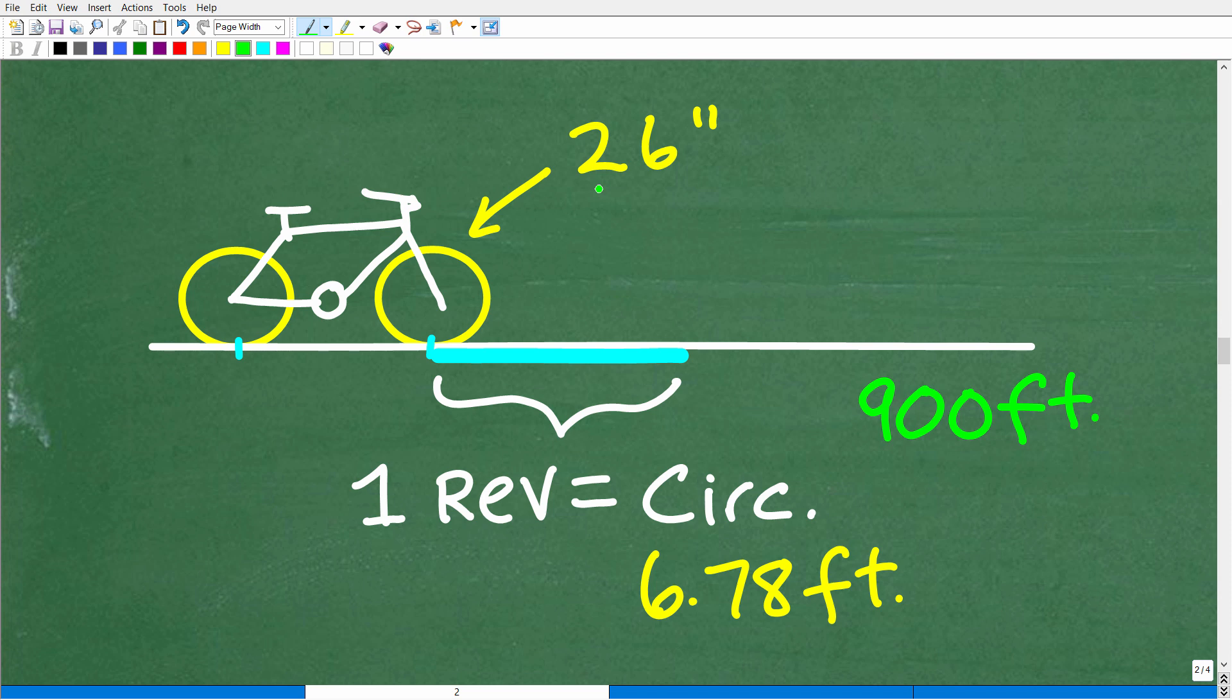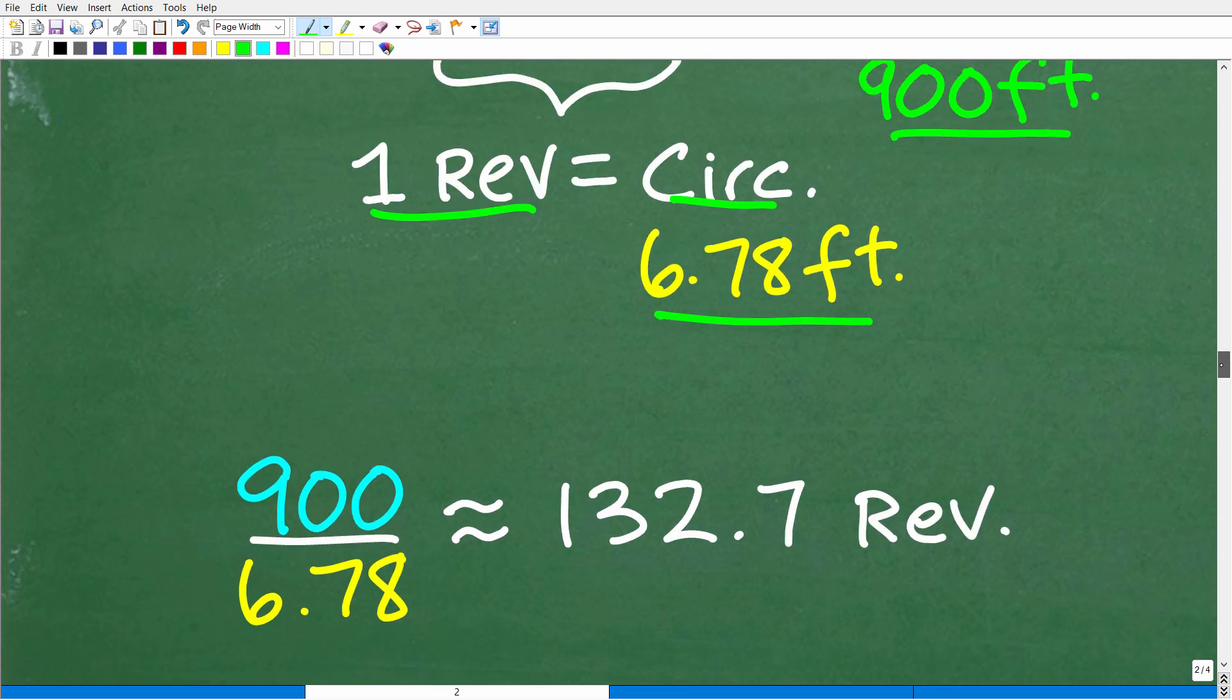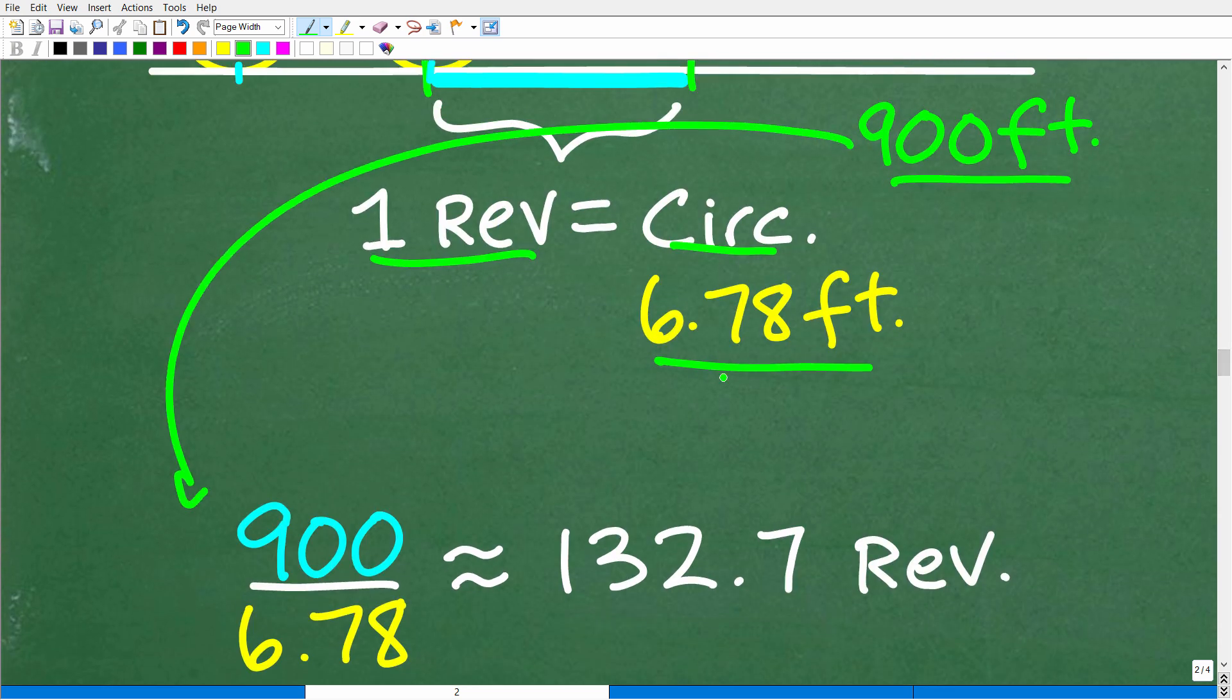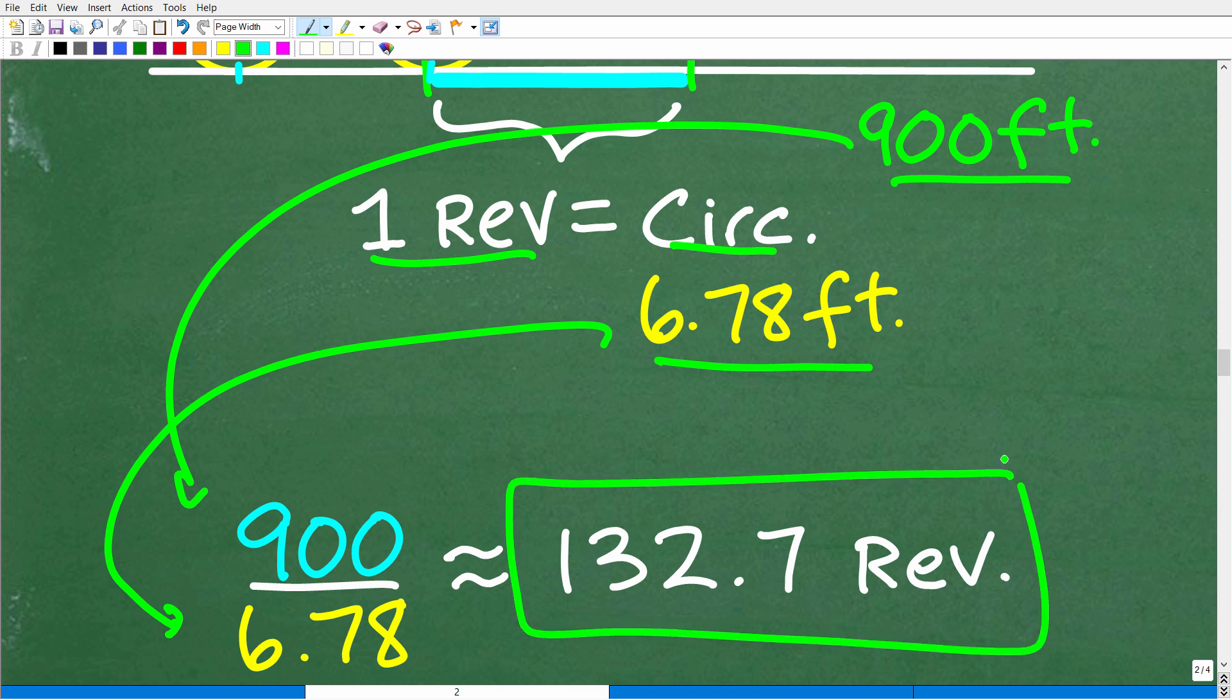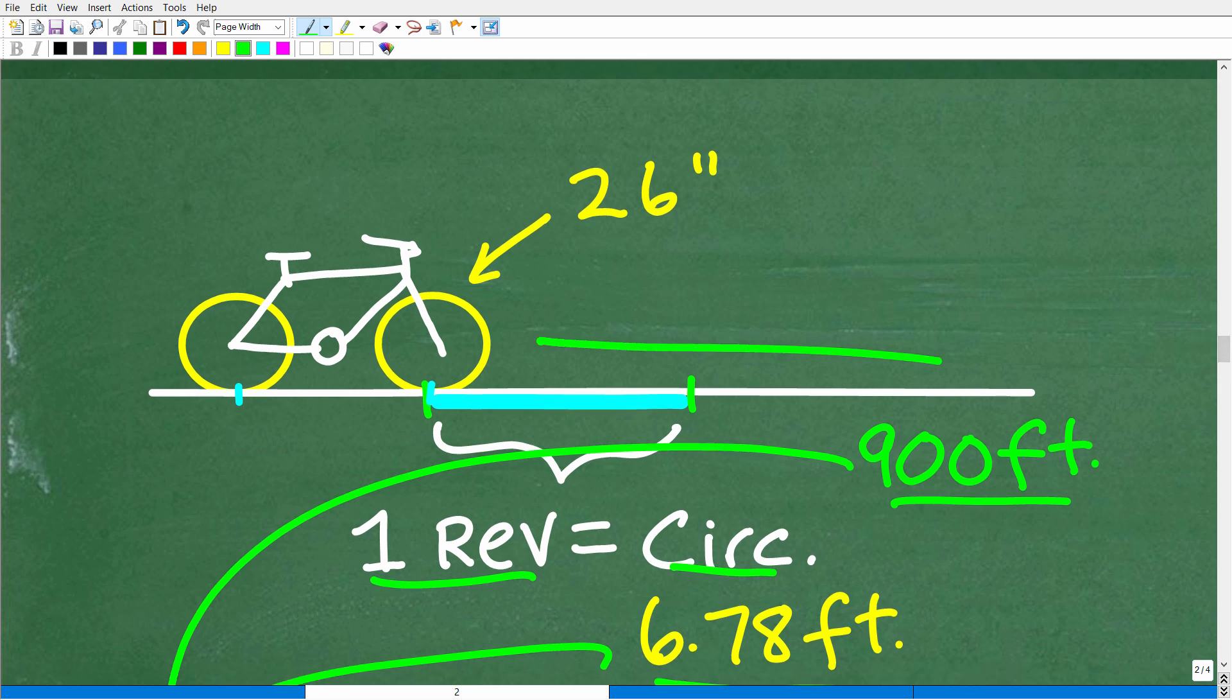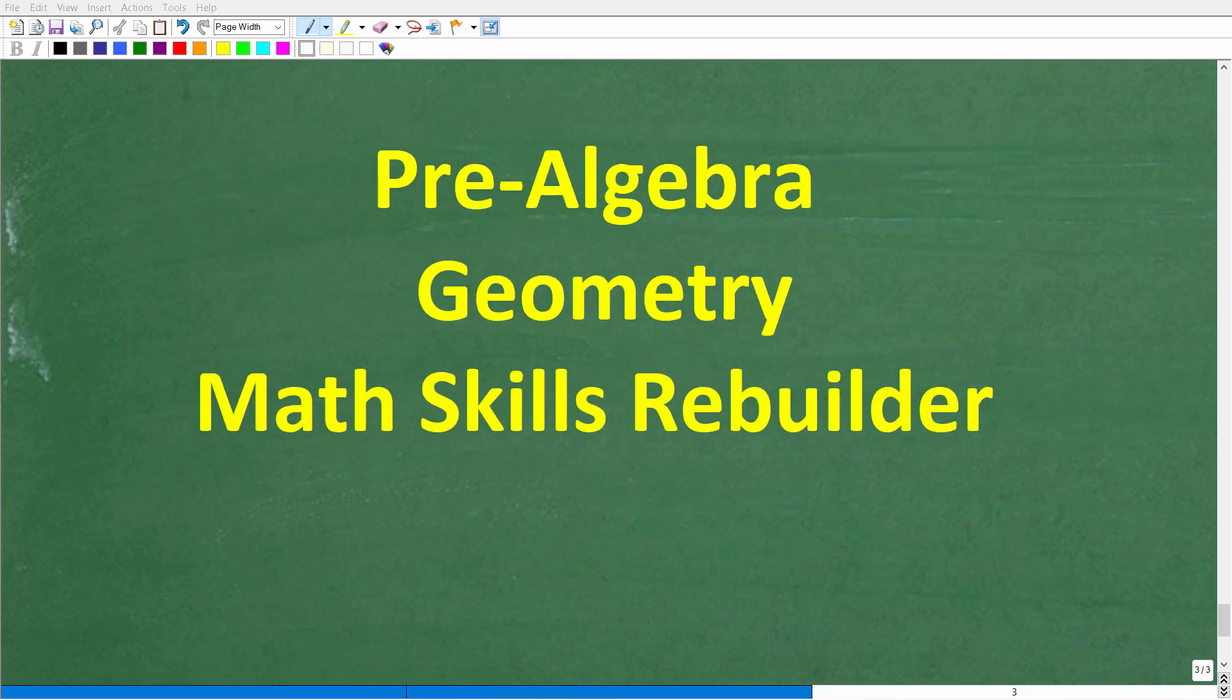So now let's put this together. Here is our 26 inch tire. We know one revolution of these tires is going to be equal to the circumference, which is about 6.78 feet. And he has 900 feet to cover. So how many revolutions or how many circumference lengths will fit into this 900 feet? Well, this is just a basic division problem. We're just going to take that 900 feet and divide it by the circumference, the length of the circumference. So 900 divided by 6.78 gives us approximately 132.7 revolutions. And this is how many times Ed's bike tires will turn during the course of his 900 foot trip.